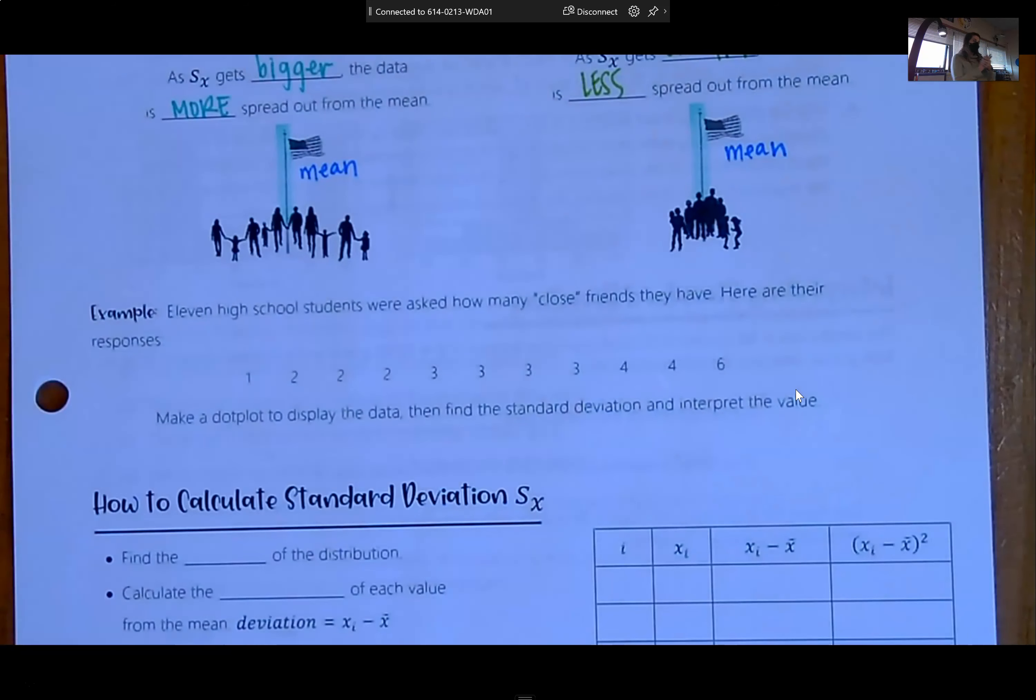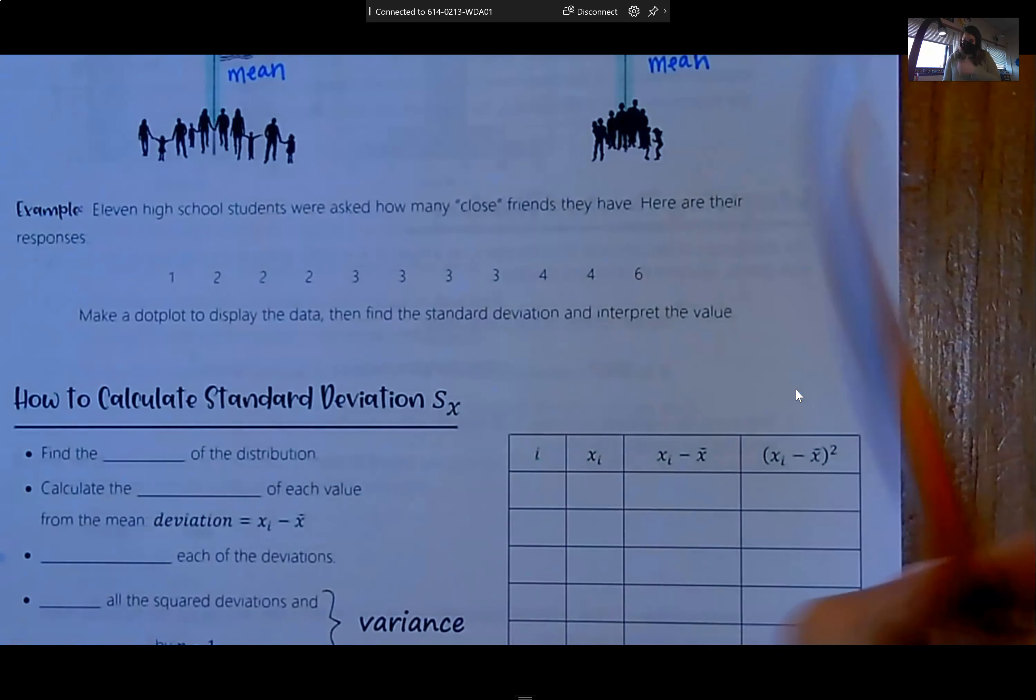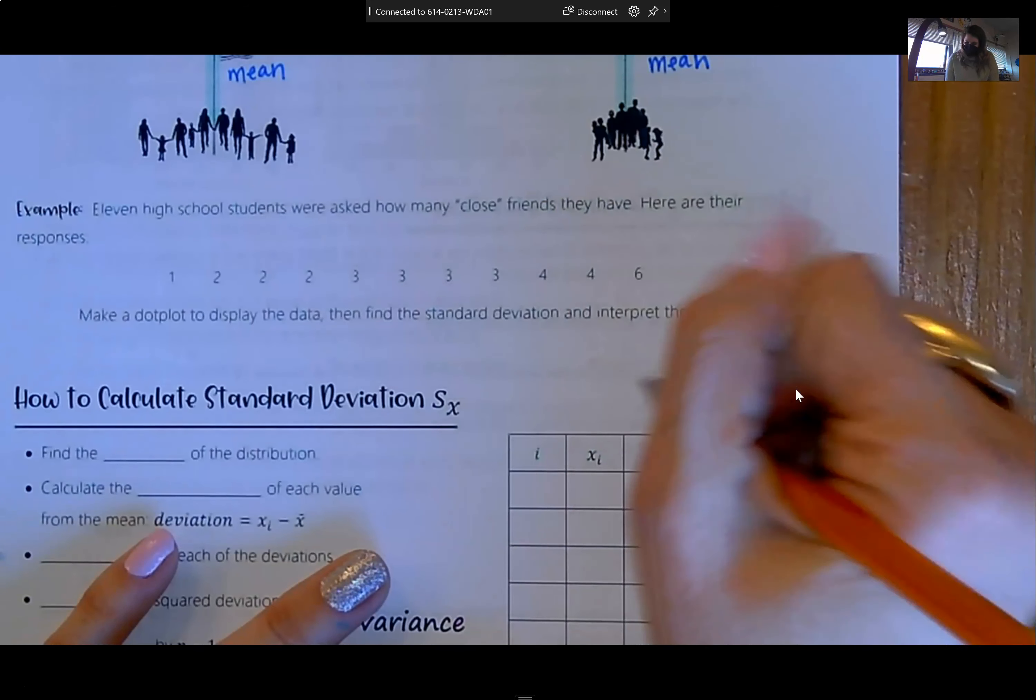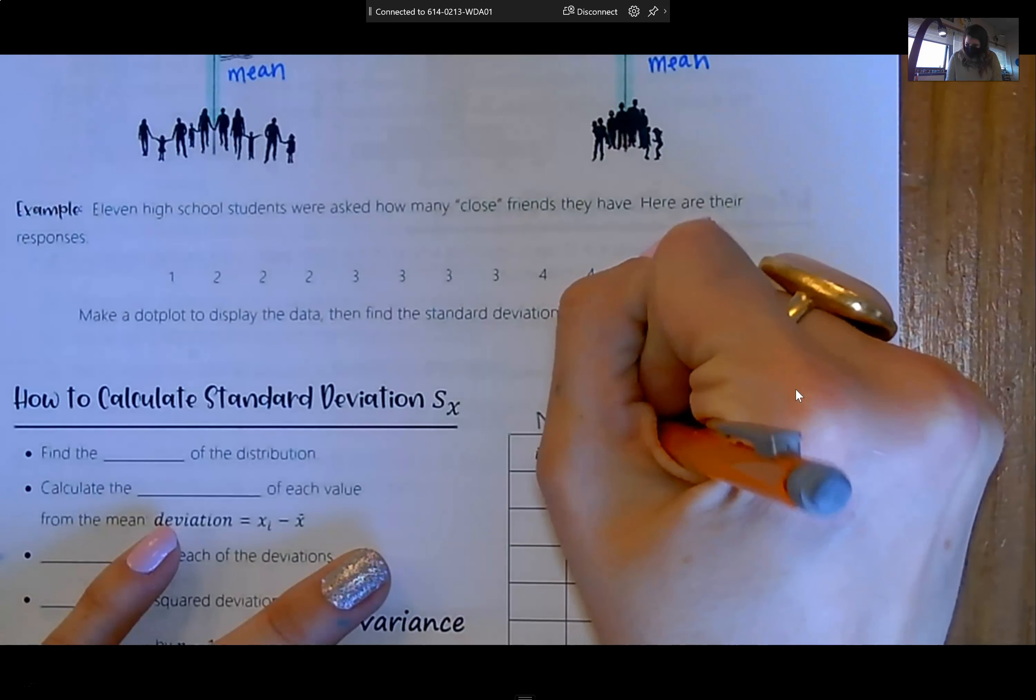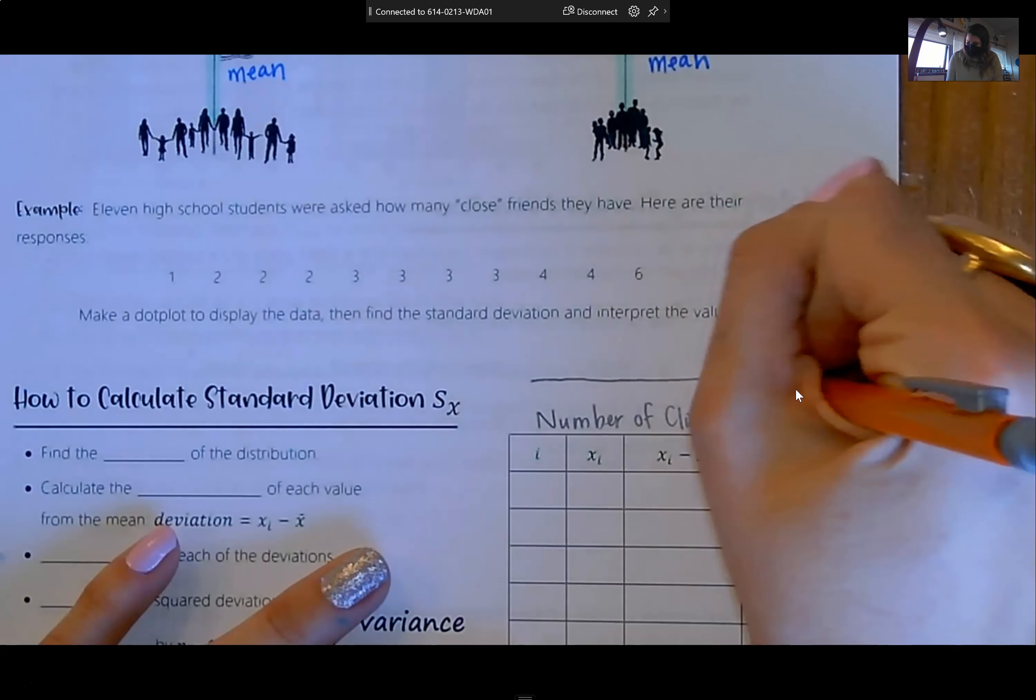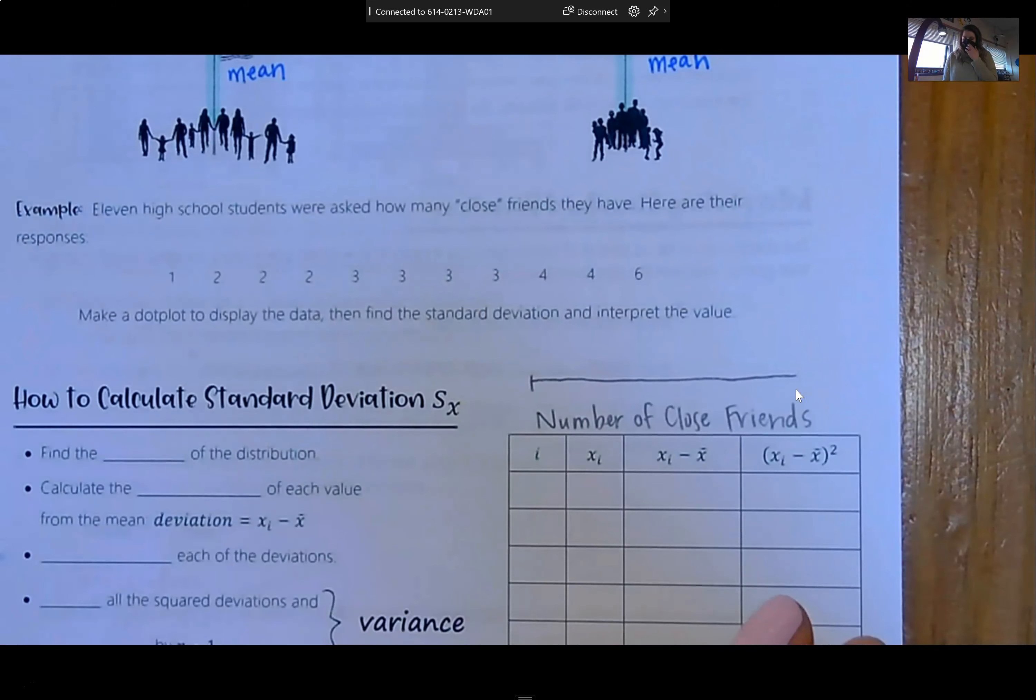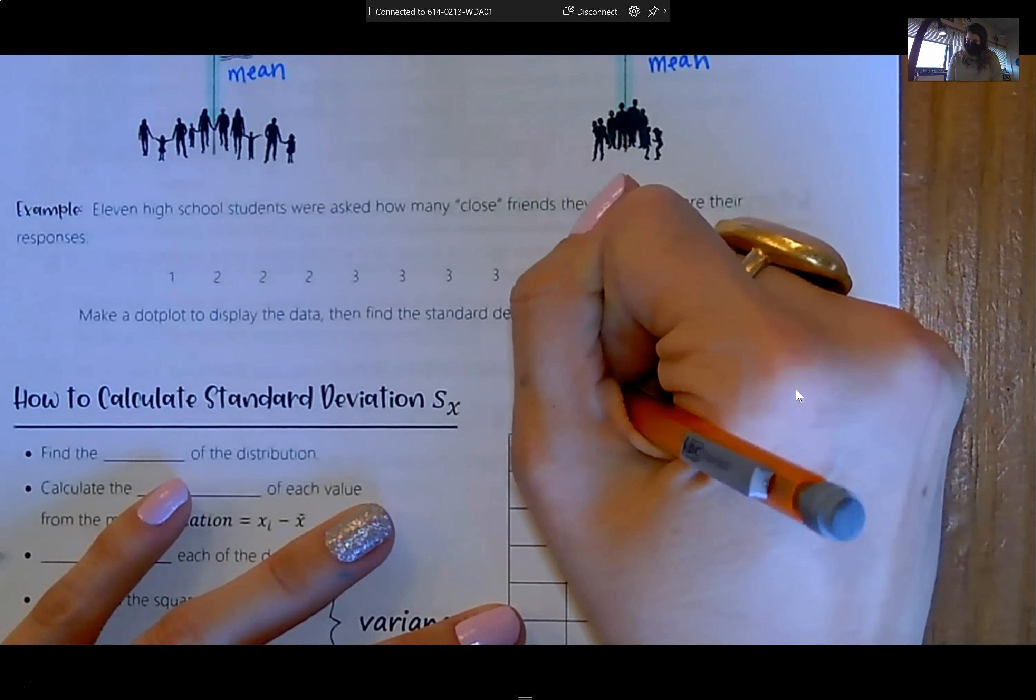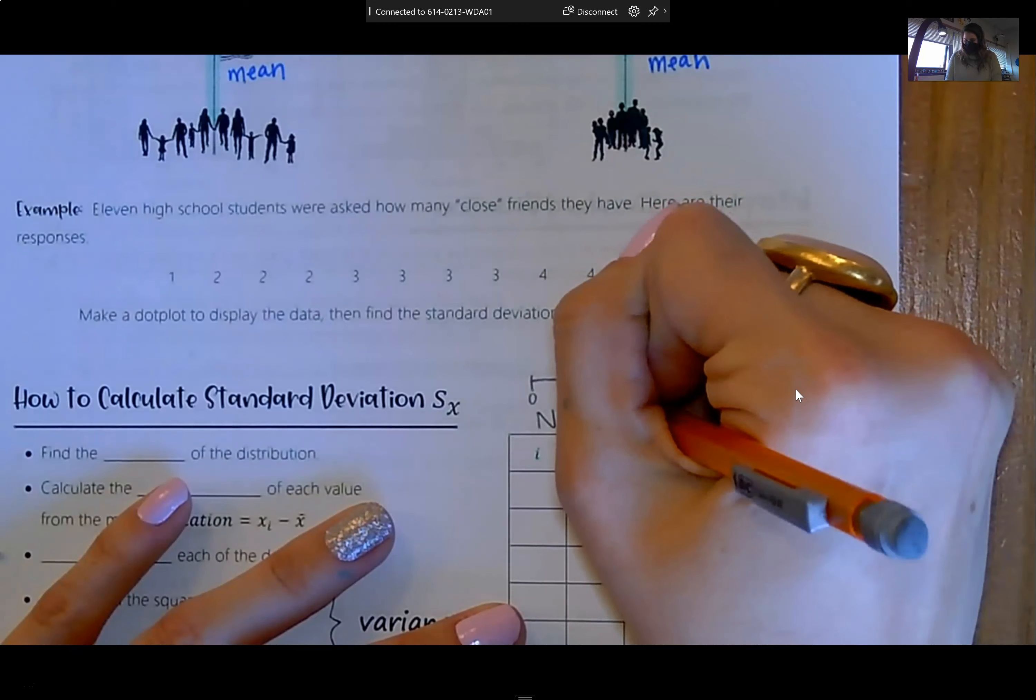We're estimating what is the average score on the 2020 AP exam, what is the average height, what is the proportion of people that agree with something. We're estimating some value. So we want our estimates to be very close to each other. Because if they're spread out, that means we can't really rely on what we're trying to find the value of. To show you how to actually calculate standard deviation by hand, we get a data set that has 11 observations.